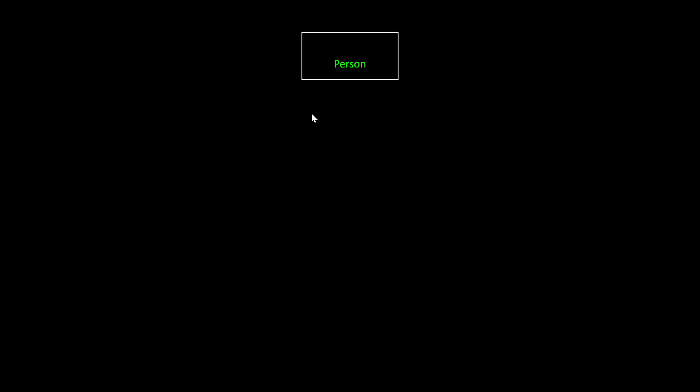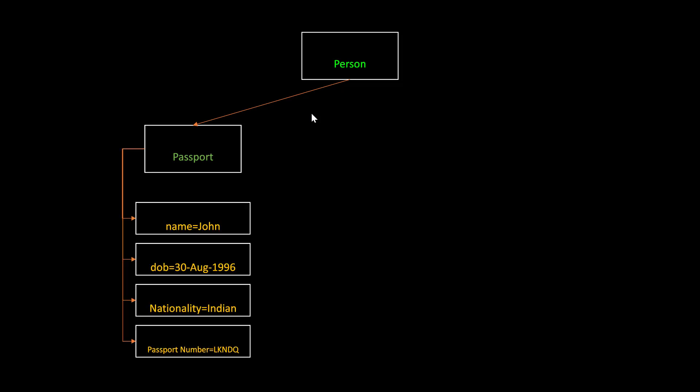Suppose a person goes to an airport. There, before entering the airport, the security person may ask for his identity. Then he may show his ticket and his passport. The passport will contain details about the person like name, date of birth, nationality, passport number, etc. The person who is being authenticated is the claims principle. The passport which contains the identity information of the person is called the claims identity. And the facts which are present in the passport or the claims identity are called claims.